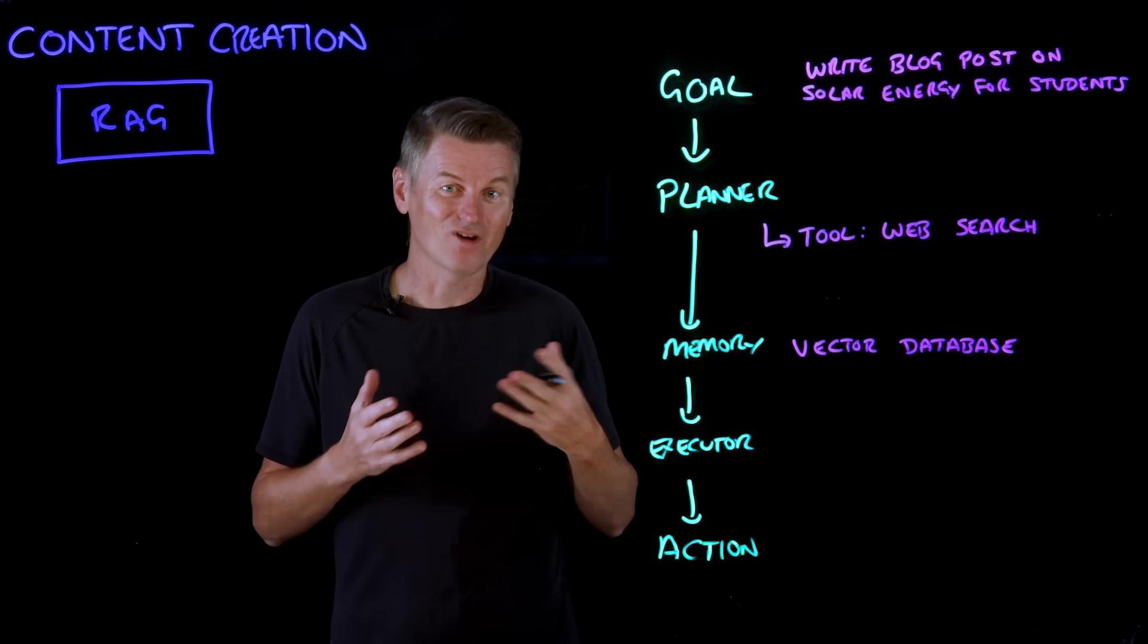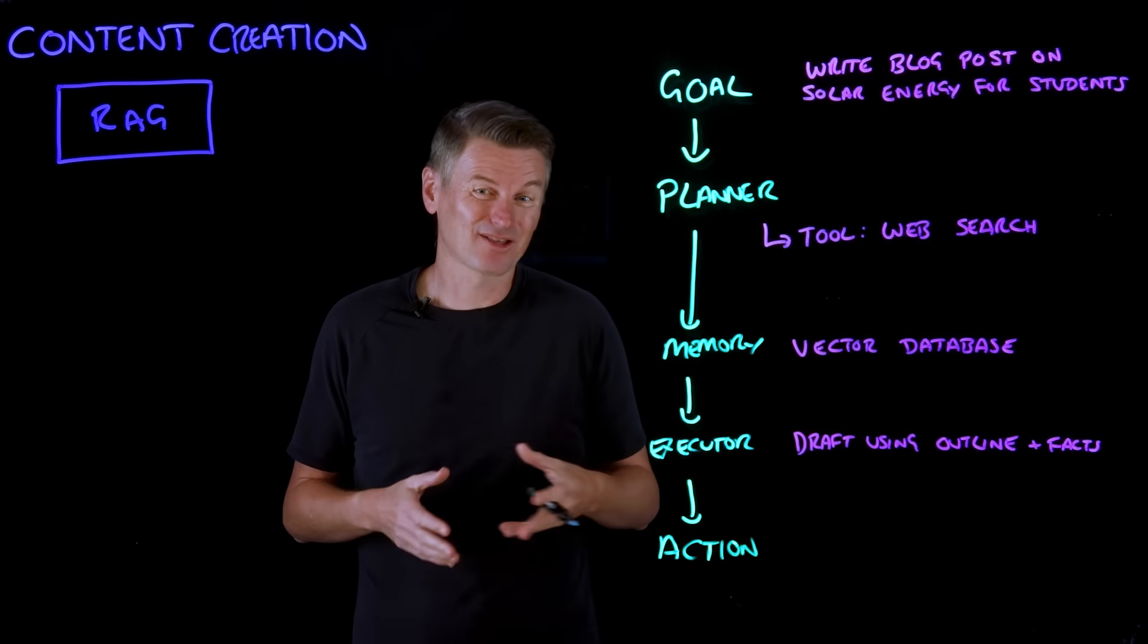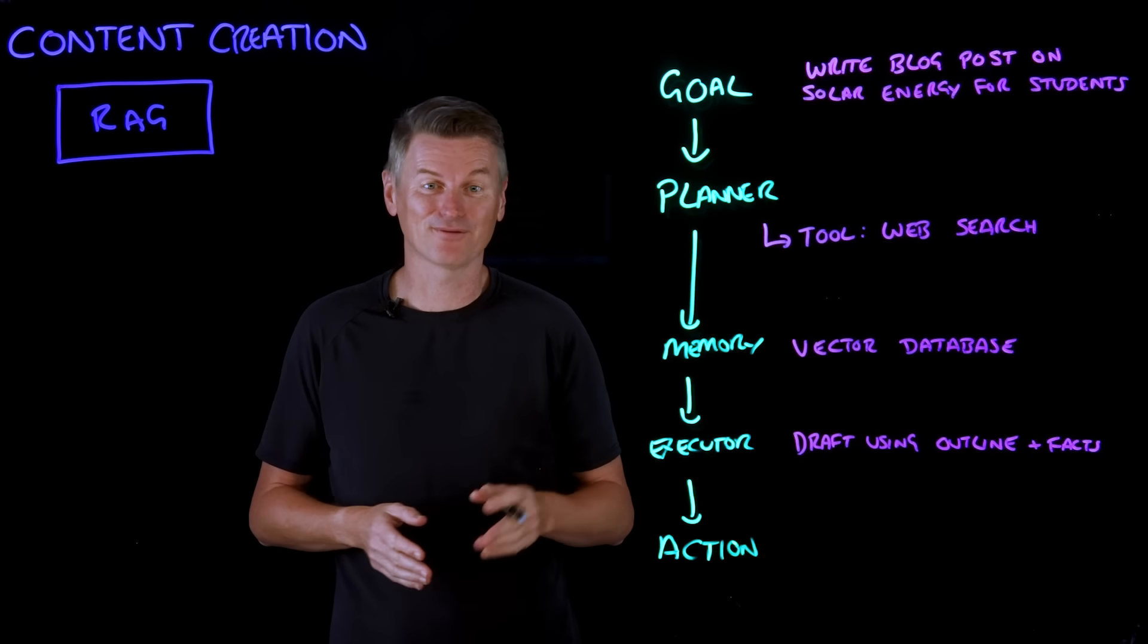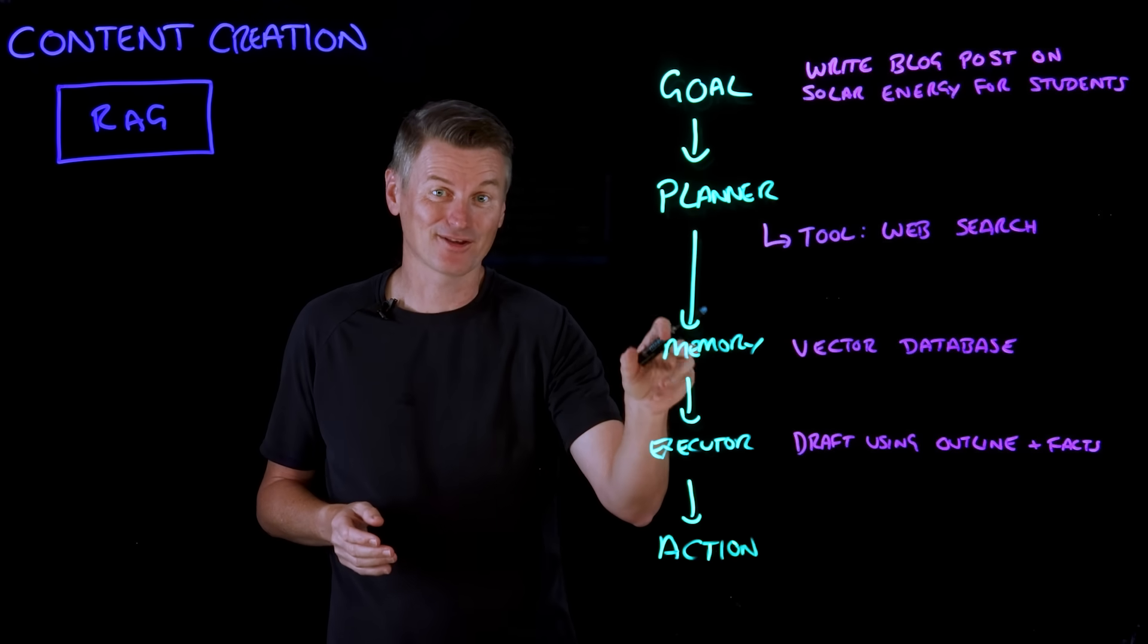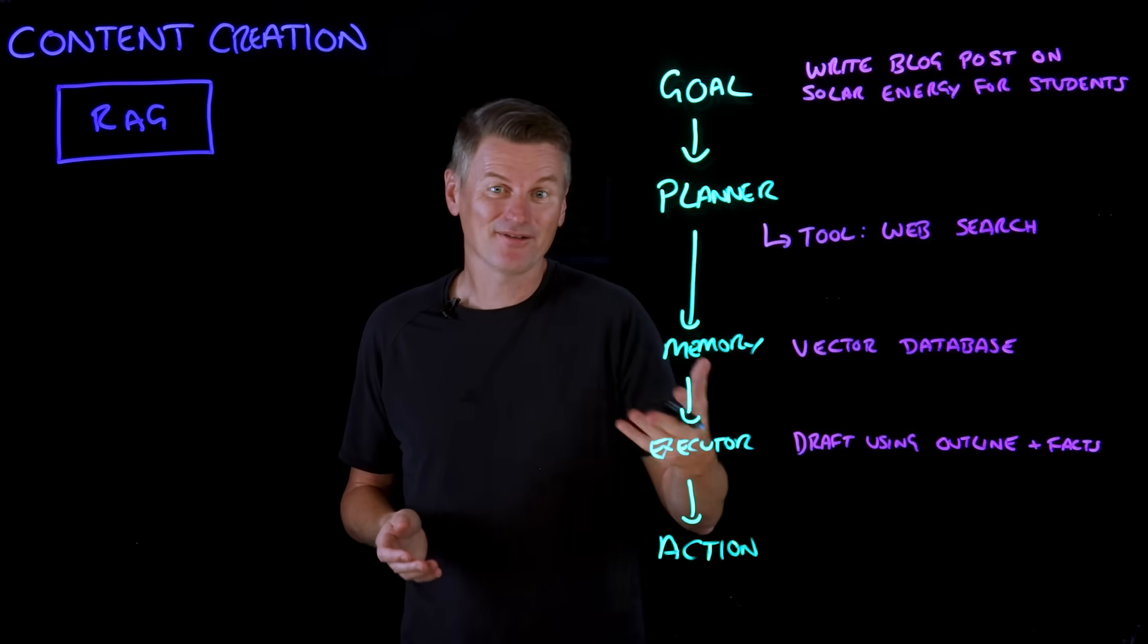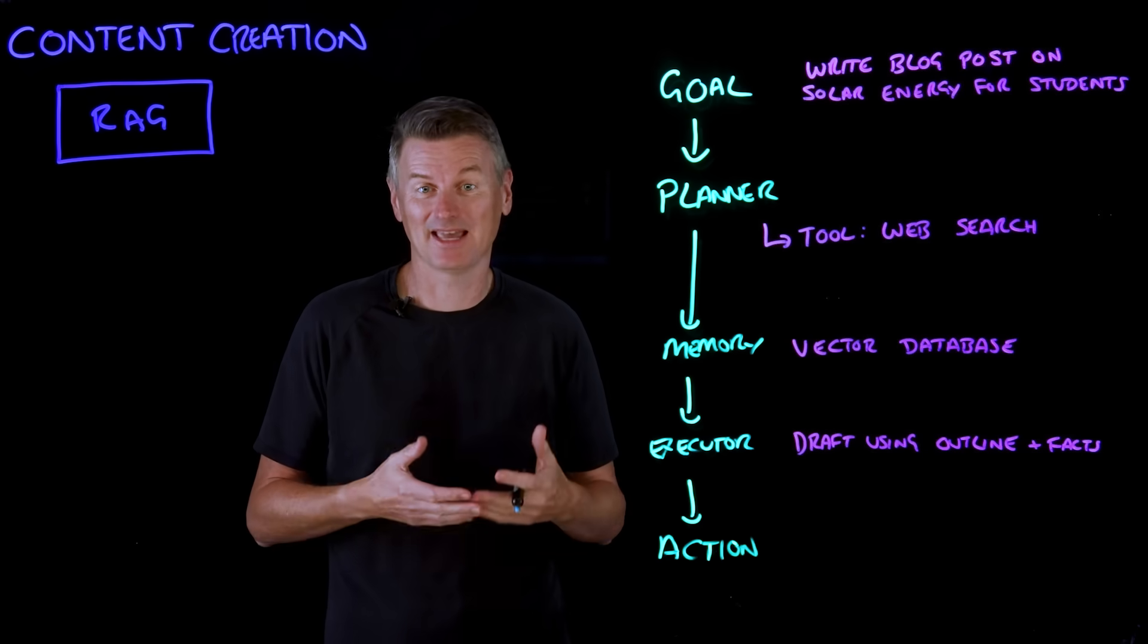Now, when the executor starts writing using a large language model, it doesn't just rely on the large language model's training data, which is probably from years ago. Instead, it retrieves the most relevant information from that fresh vector store based on the section it's currently writing. So if it's drafting the economic benefits section, it pulls up the latest cost per kilowatt statistics.